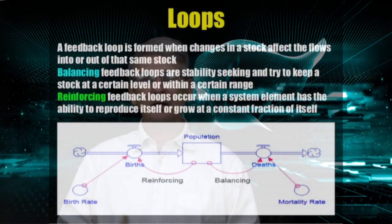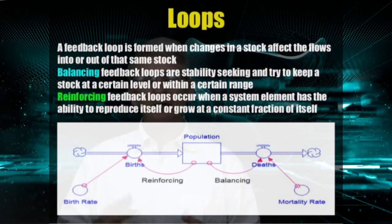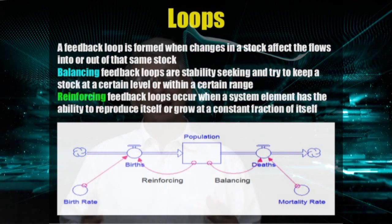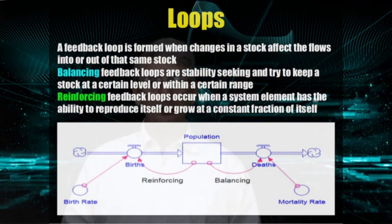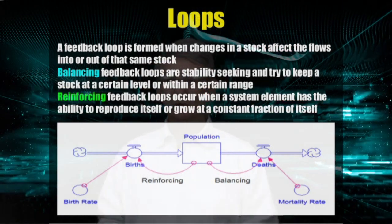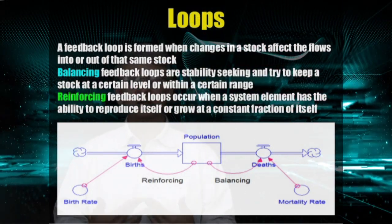Once we have identified stock and flows, we can identify the loops formed when changes in stock affect the flow in and out of the same stock. This happens in two forms: balancing, in which the feedback loop acts to try to keep the stock within a certain range, and reinforcing loops, where the stock can increase or decrease exponentially.